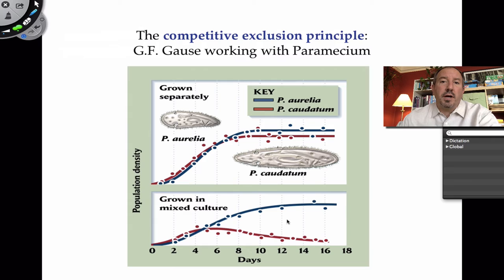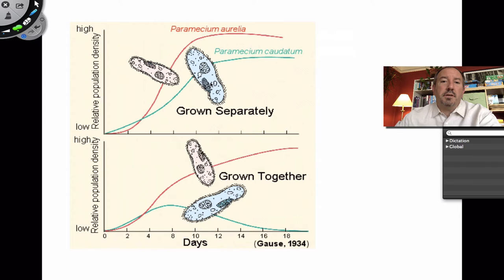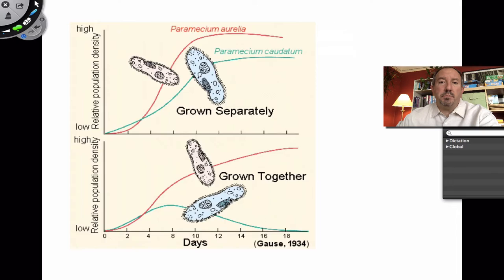When you grow them separately and then together, one dominates over the other, and that species is being excluded. What's a little weird is that when you actually look at some pond water or a lake and pull some water out and look at these Paramecium under the microscope, you see that two different species are actually in the same lake. I thought they were supposed to compete and one was supposed to dominate over the other. As it turns out, something interesting is going on - apparently they don't have to compete.